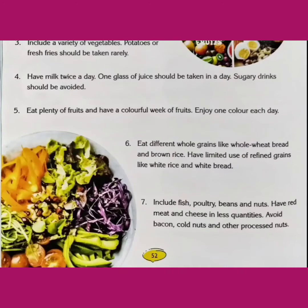Point number six: Eat different whole grains like whole wheat bread and brown bread. Have limited use of refined grains like white rice and white bread. हमें ज्यादा से ज्यादा मात्रा में साबुत अनाज के बने wheat bread, brown bread और brown rice खाना चाहिए। बहुत कम मात्रा में white bread का use करना चाहिए। Wheat आपके लिए rice की तुलना में ज्यादा healthy होता है — rice भी carbohydrate देता है लेकिन limited quantity में लेना चाहिए।